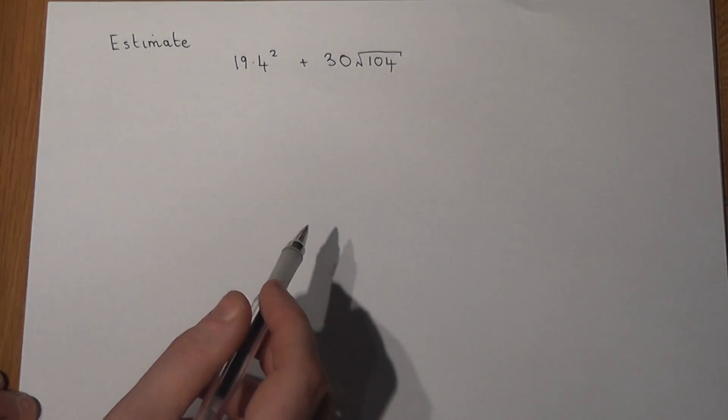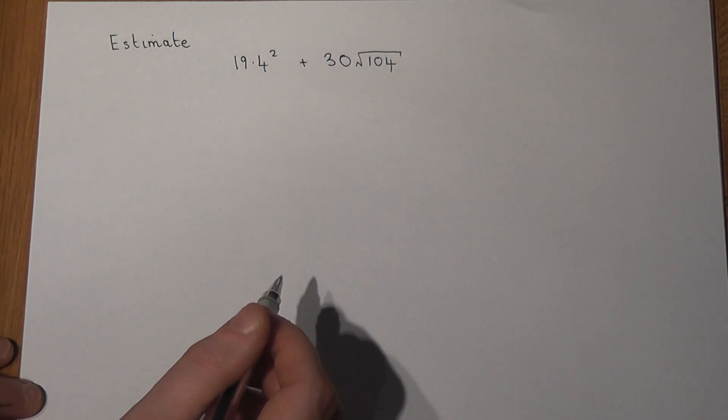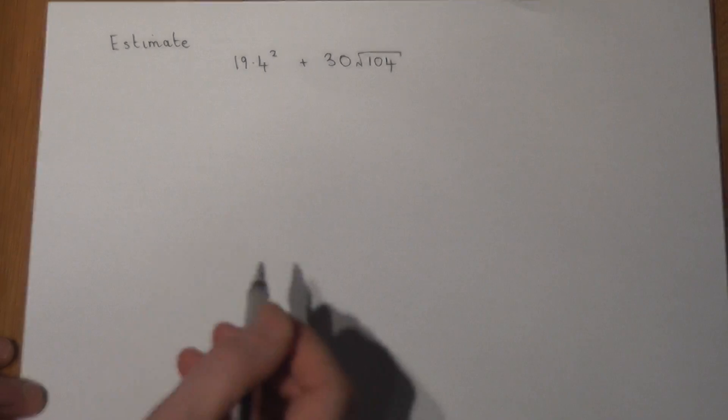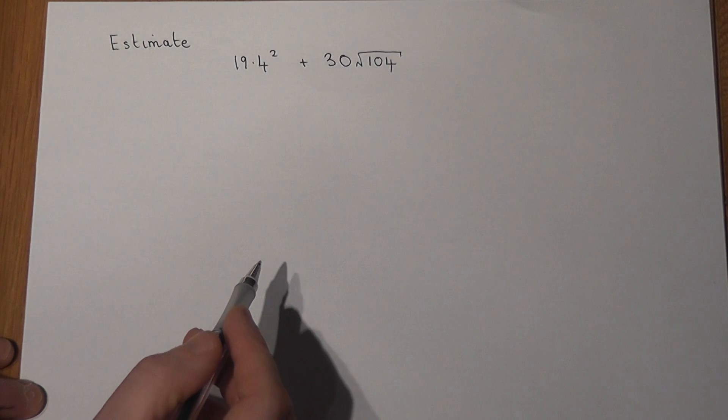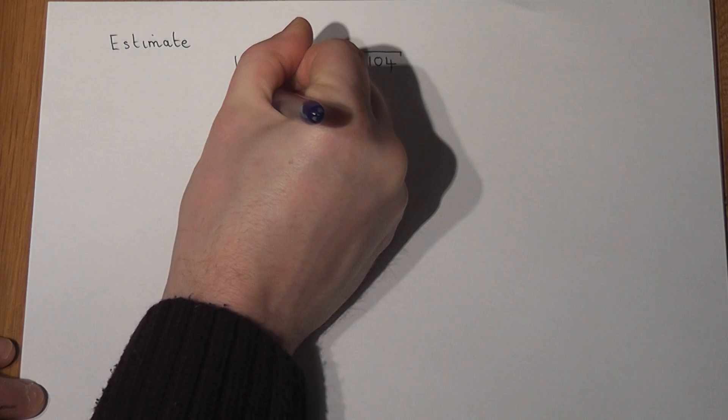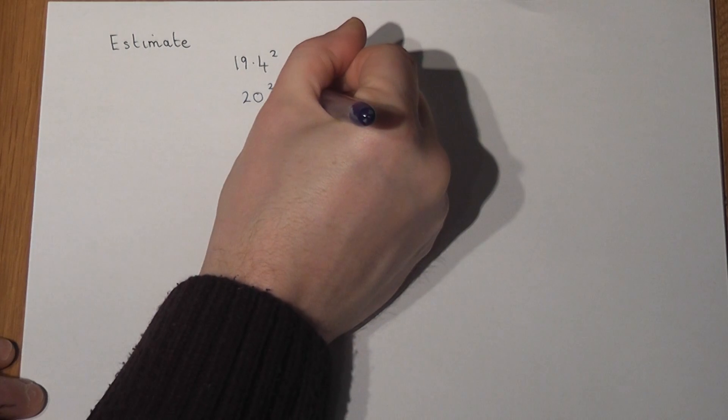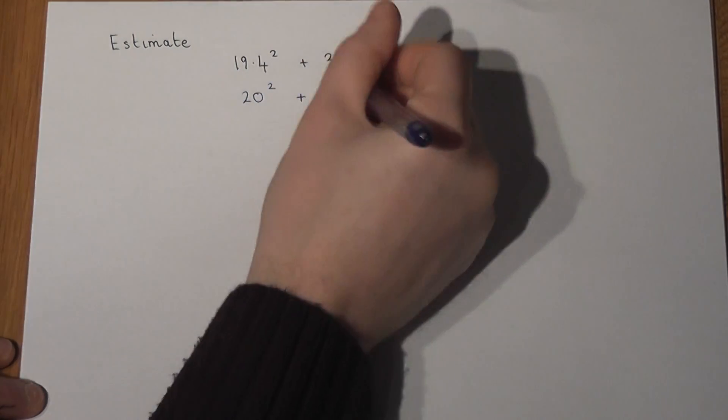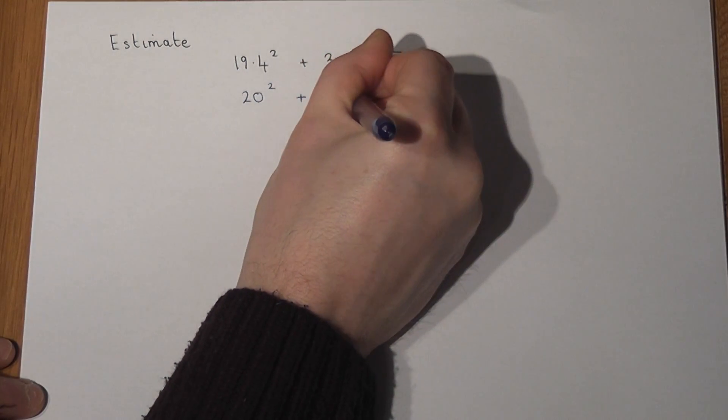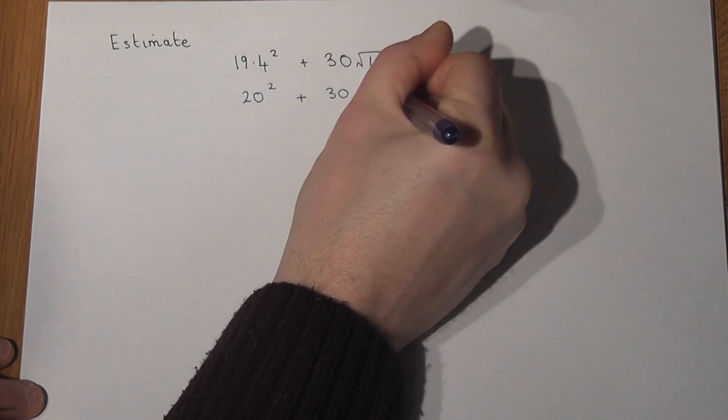And to write it out first of all with all those figures in. So 19.4 we know is around about 20, so this is the same as 20 squared. There's a 30 there and a square root of what is approximately 100. And an integer next to a square root means that those two things are being multiplied together.